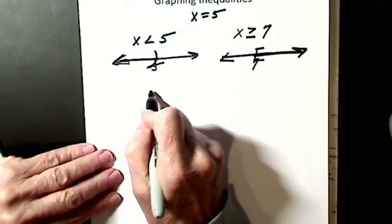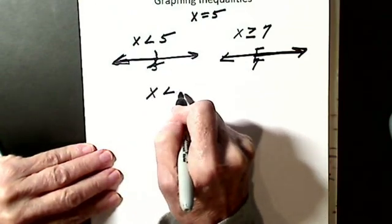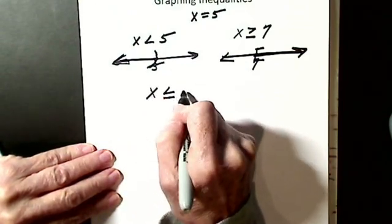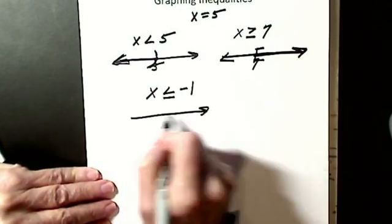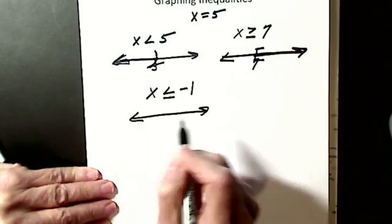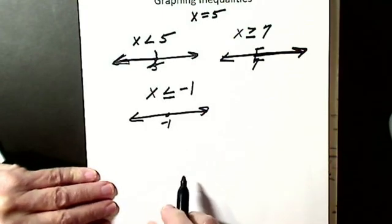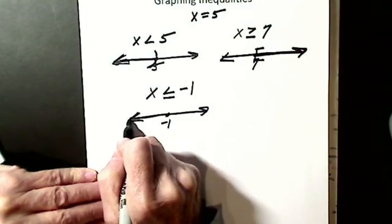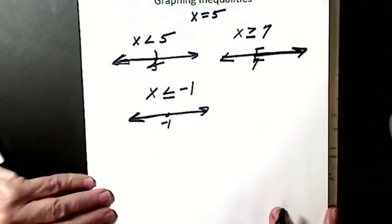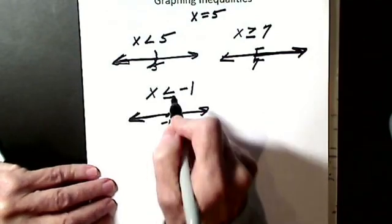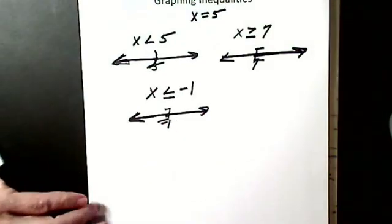Let's do another one with a negative. Let's have x is less than or equal to negative 1. Here's my number line, here's my negative 1. Less than goes this way. It has or equal, so it's a bracket.